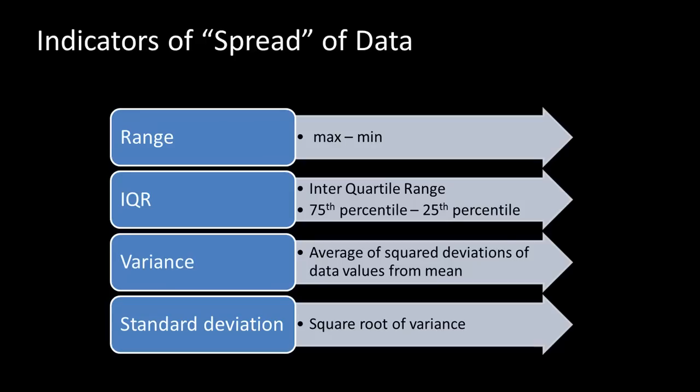Another good indicator of the spread of data is the interquartile range, or IQR, which is essentially the difference between the values at the 75th percentile and the 25th percentile. Continuing our example of prices, if the 25th percentile is at $2 and the 75th percentile is at $10, then the IQR would be 10 minus 2, that's $8.